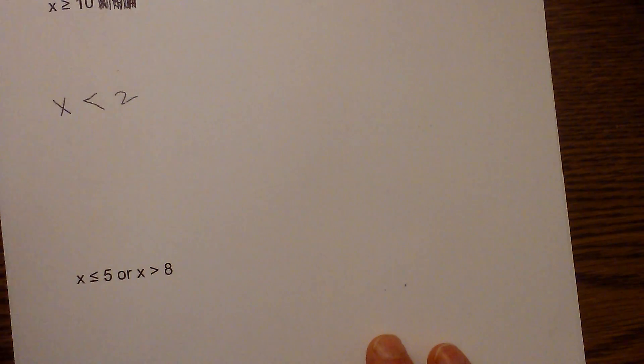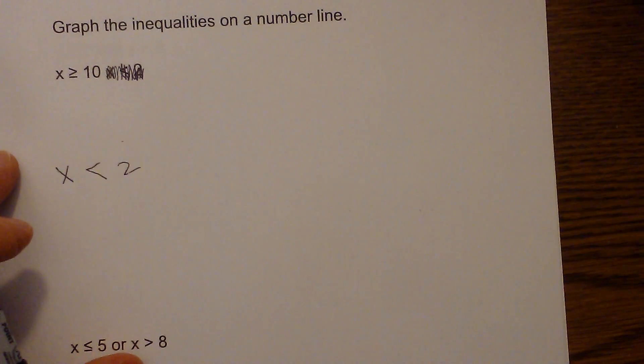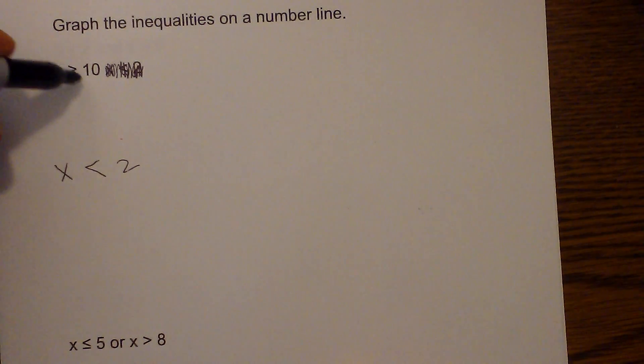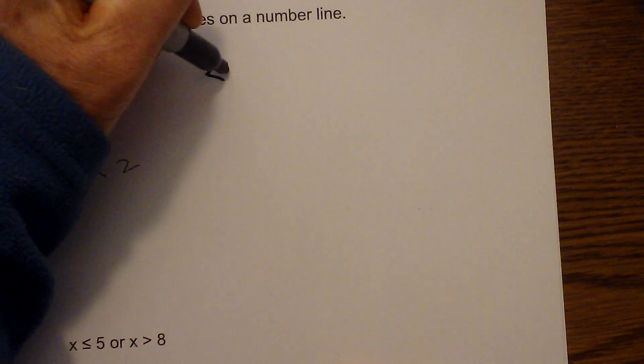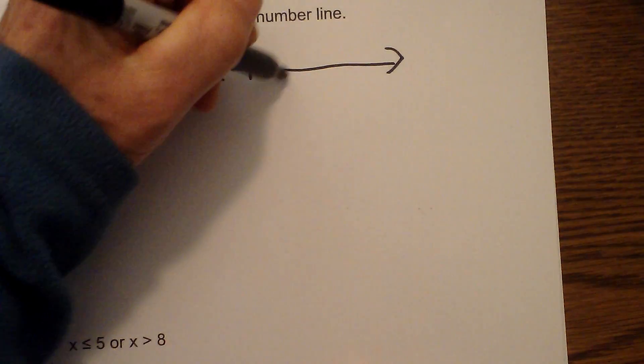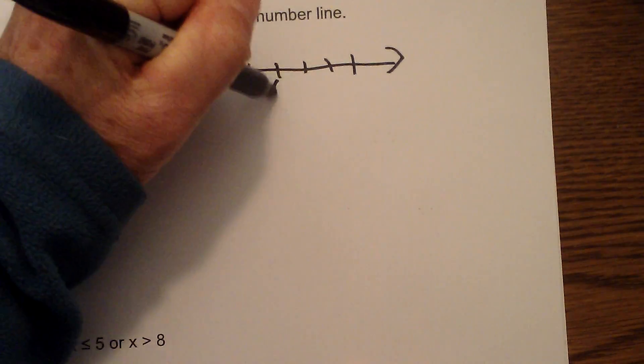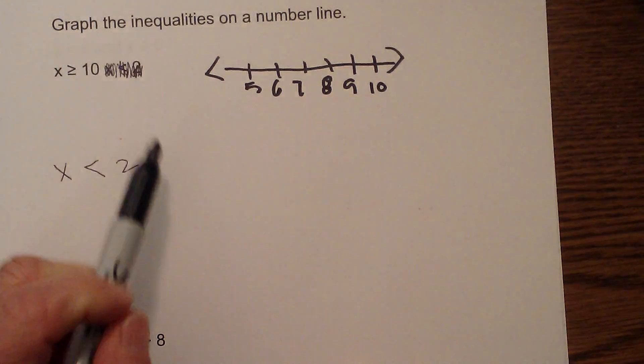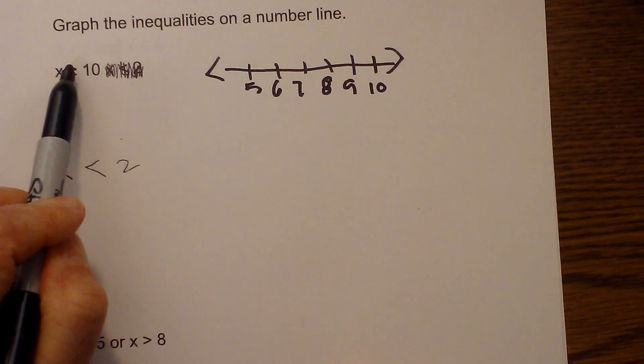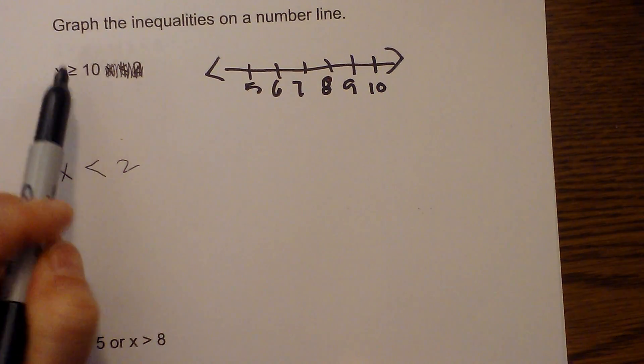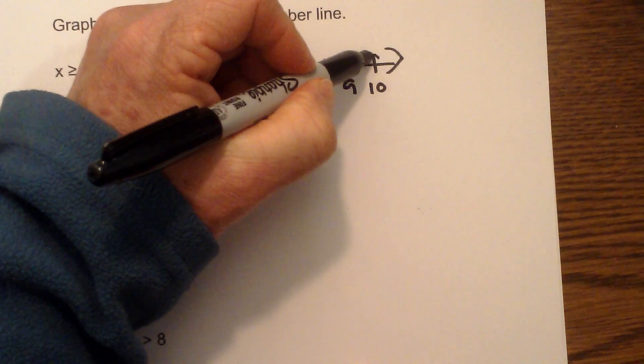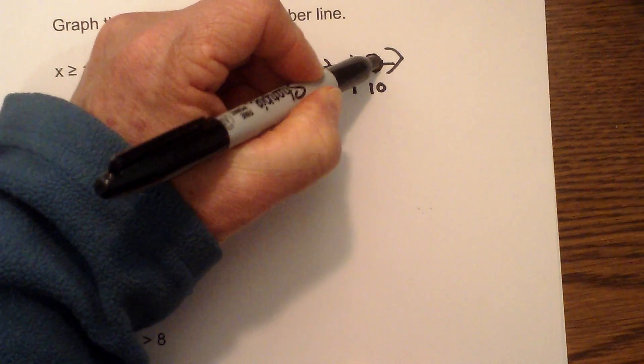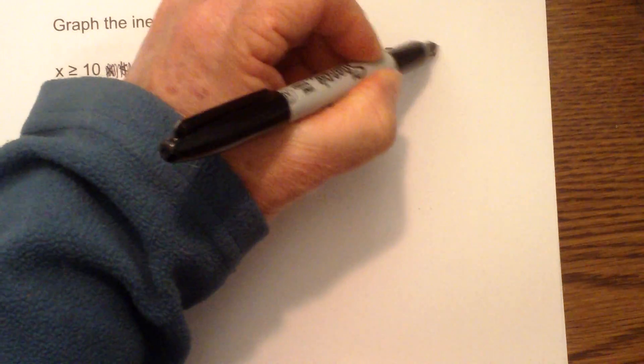So why don't we work one or two more examples of these. We have x is greater than or equal to 10. So now we have, let's go 5, 6, 7, 8, 9, 10, and we have greater than or equal to 10, so that means that it is going to be included, so it will be shaded.